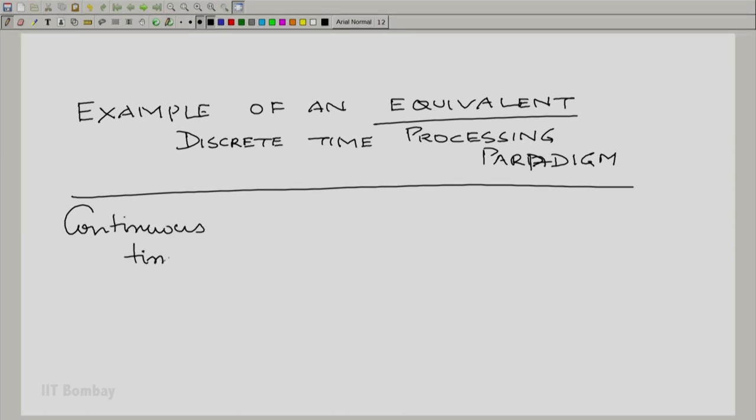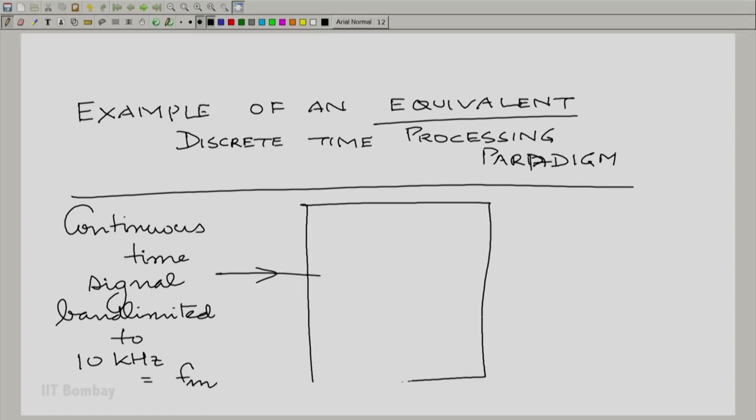Let us assume we have a continuous time signal band limited to 10 kilohertz. We wish to process this using a simple RC circuit. We would of course generate the output continuous time signal.